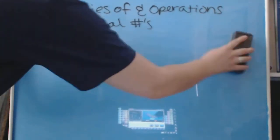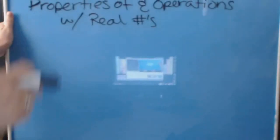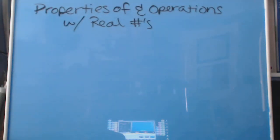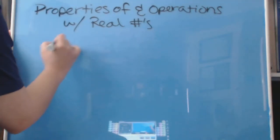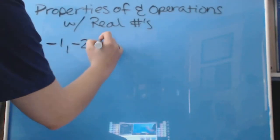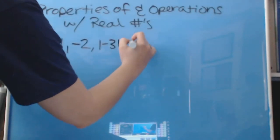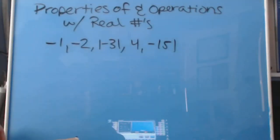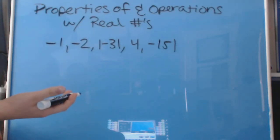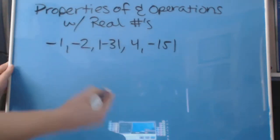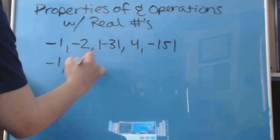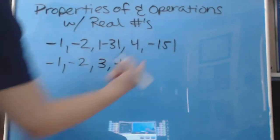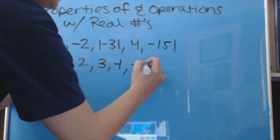Now we'll do number 35, putting all of these values in order. We have the numbers: negative 1, negative 2, absolute value of negative 3, 4, and then negative absolute value of 5. We have to evaluate the absolute values first so we know what numbers we're actually dealing with. Negative 1 stays the same, negative 2 stays the same, absolute value of negative 3 is positive 3, 4 stays the same, and negative absolute value of 5 gives us negative 5.